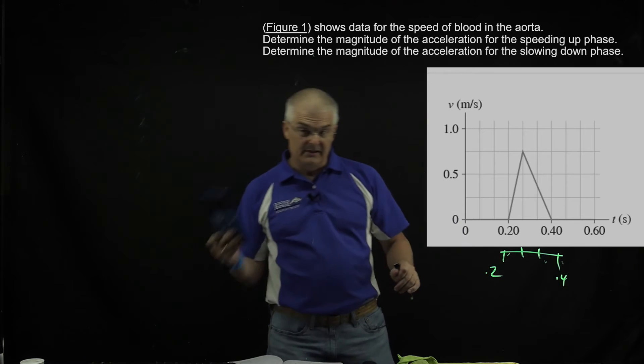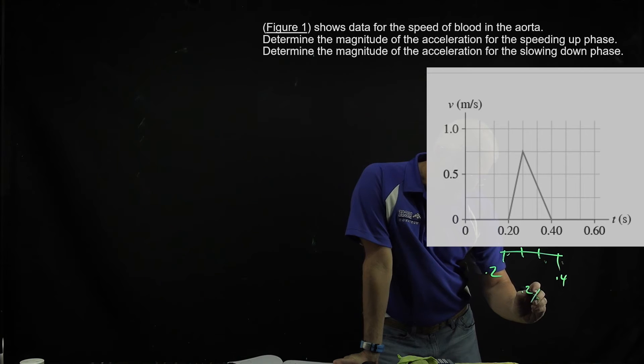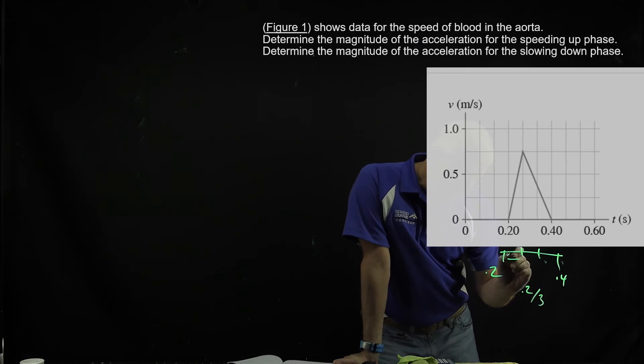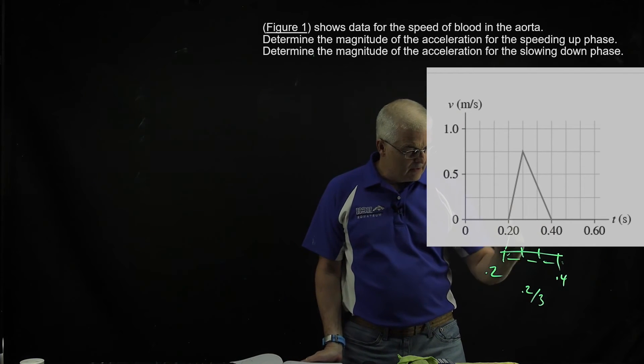So get your calculator out and take the gap, which is 0.2, and divide by 3 because there's three gaps. It's not like a nice even number, and that tells you, so when you're going from here to here...